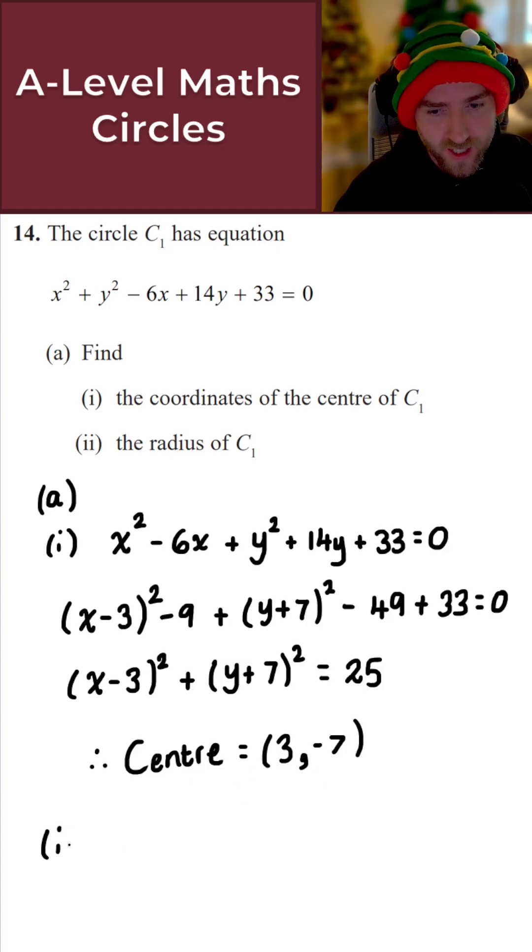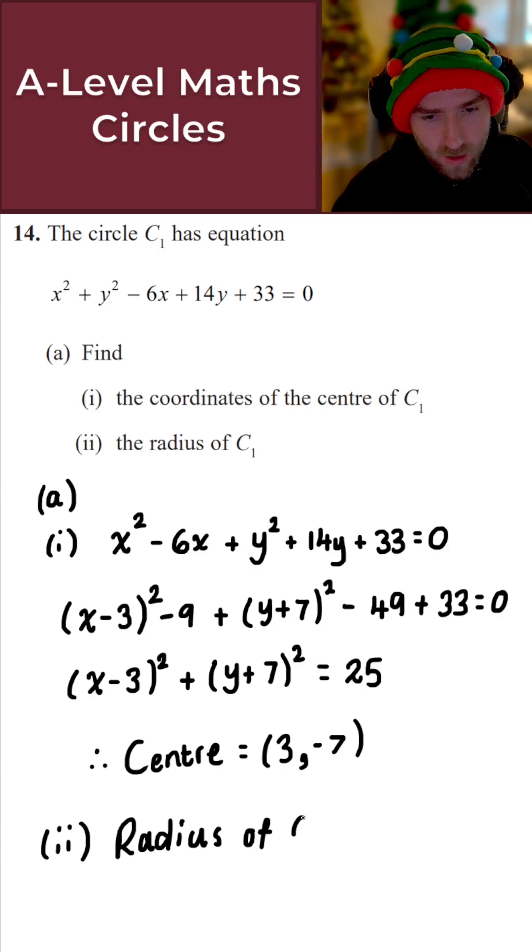And then for the radius here of C1. So for the radius of C1 here. Well, what I've got here then is r squared is 25. So r squared is 25. Just take the square root of both sides here. And r is clearly a positive value. It's a length.